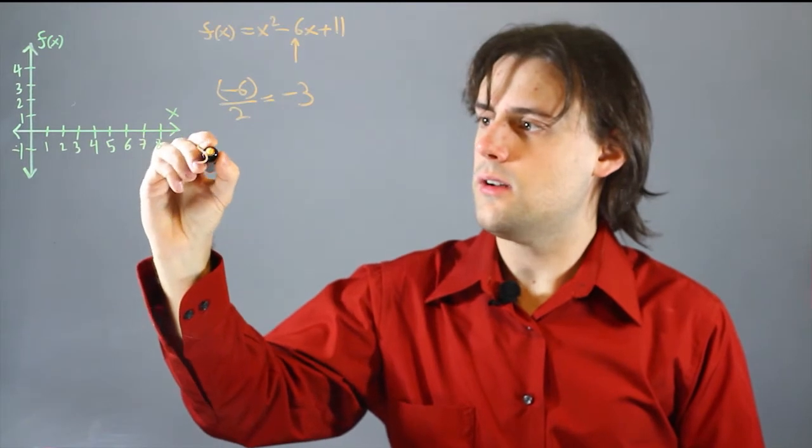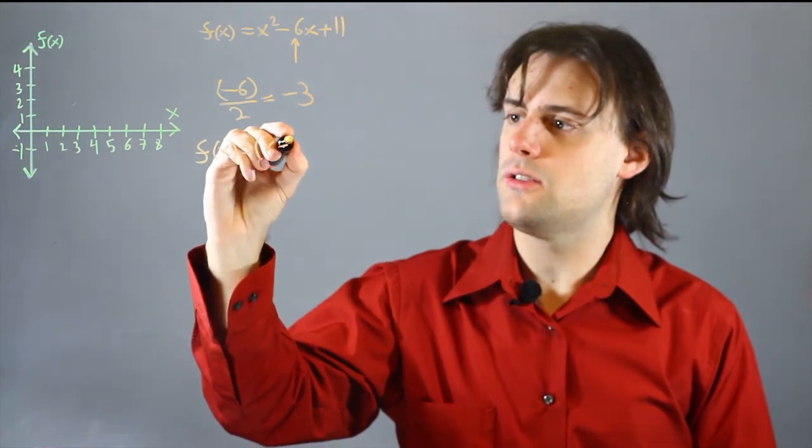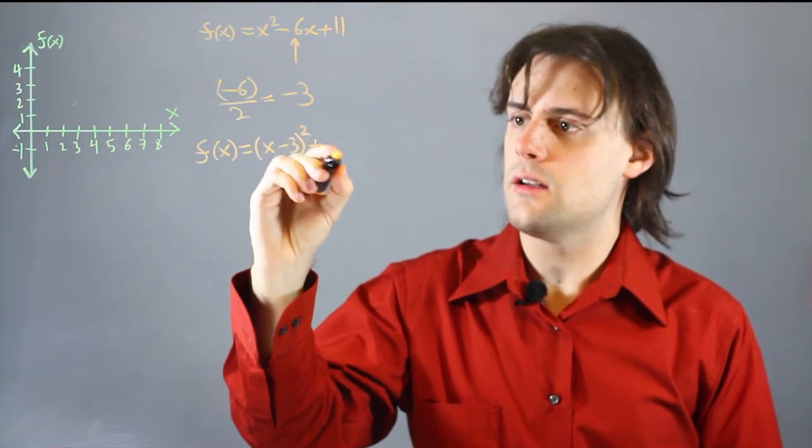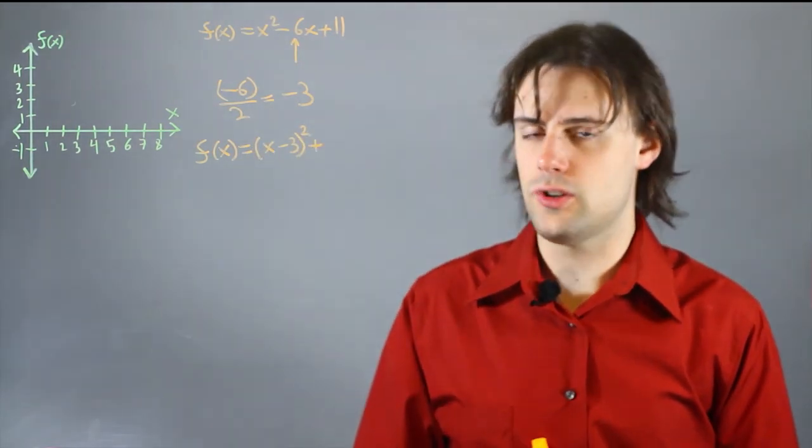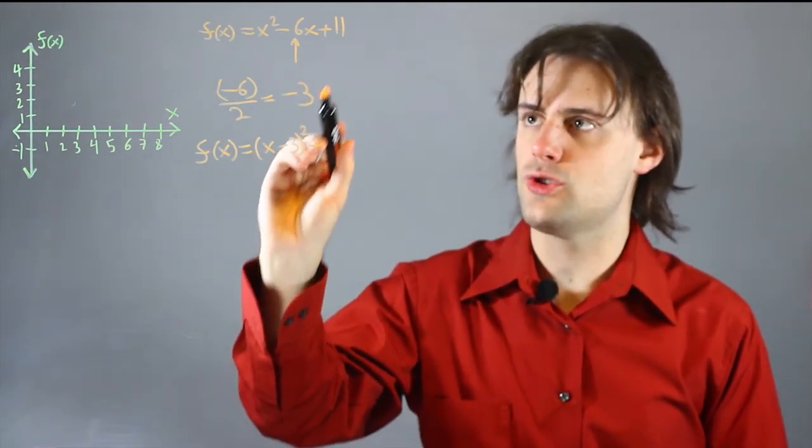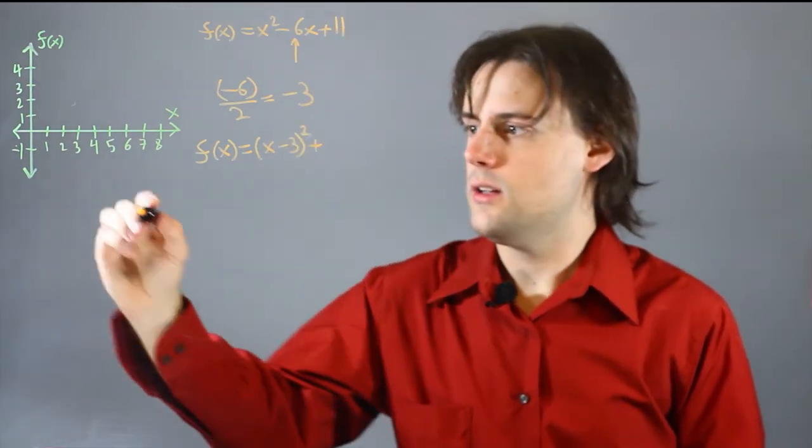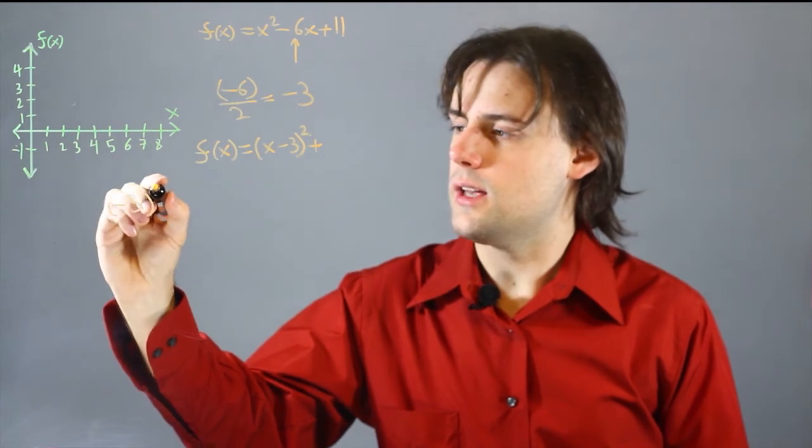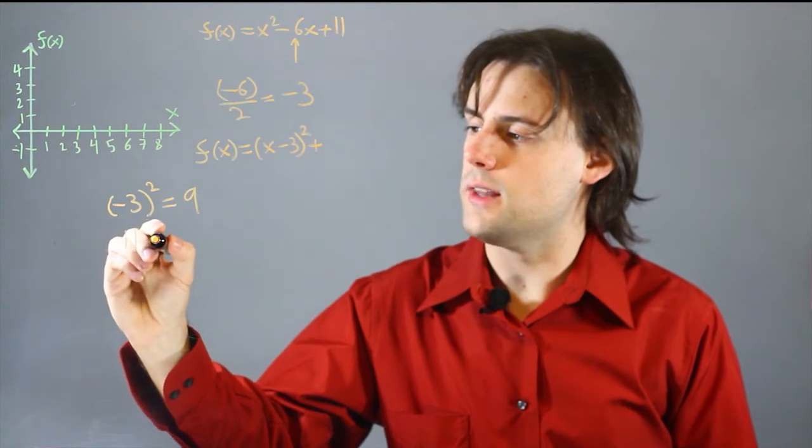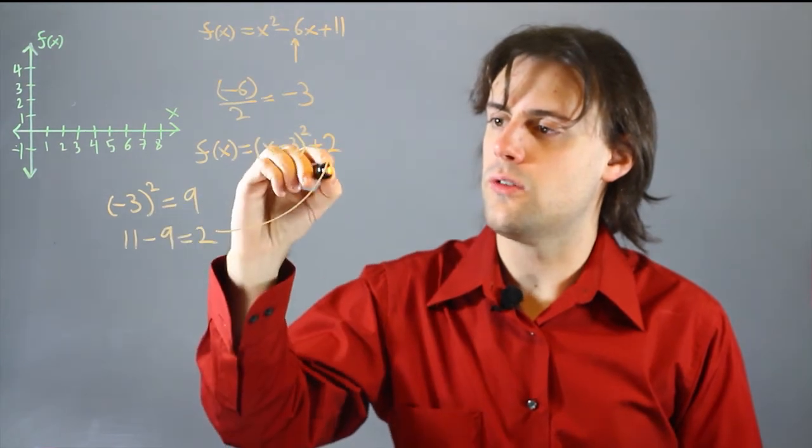So I can rewrite my original f of x as x minus 3 squared. There's also going to be a constant out here, and in order to determine that constant I need to square this number and subtract it from this original constant in the original equation. So I'm going to have negative 3 squared which is equal to 9, and I subtract that from 11 which gives me 2. So I write the 2 over here.